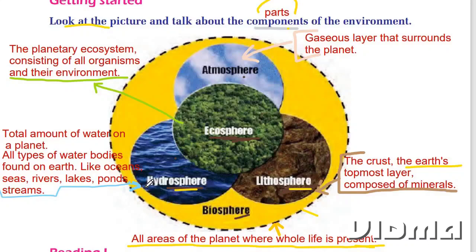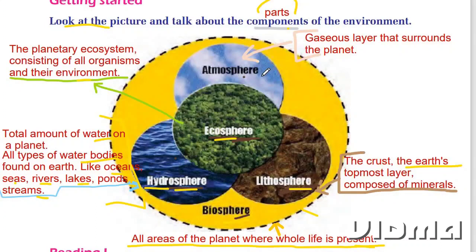Hydrosphere — hydro means water — so the total amount of water on a planet is called hydrosphere. Ecosphere is the planetary ecosystem consisting of all organisms and their environment. Atmosphere is the gaseous layer that surrounds the planet. Different types of gases are found in this component, such as oxygen, nitrogen, carbon dioxide, etc.